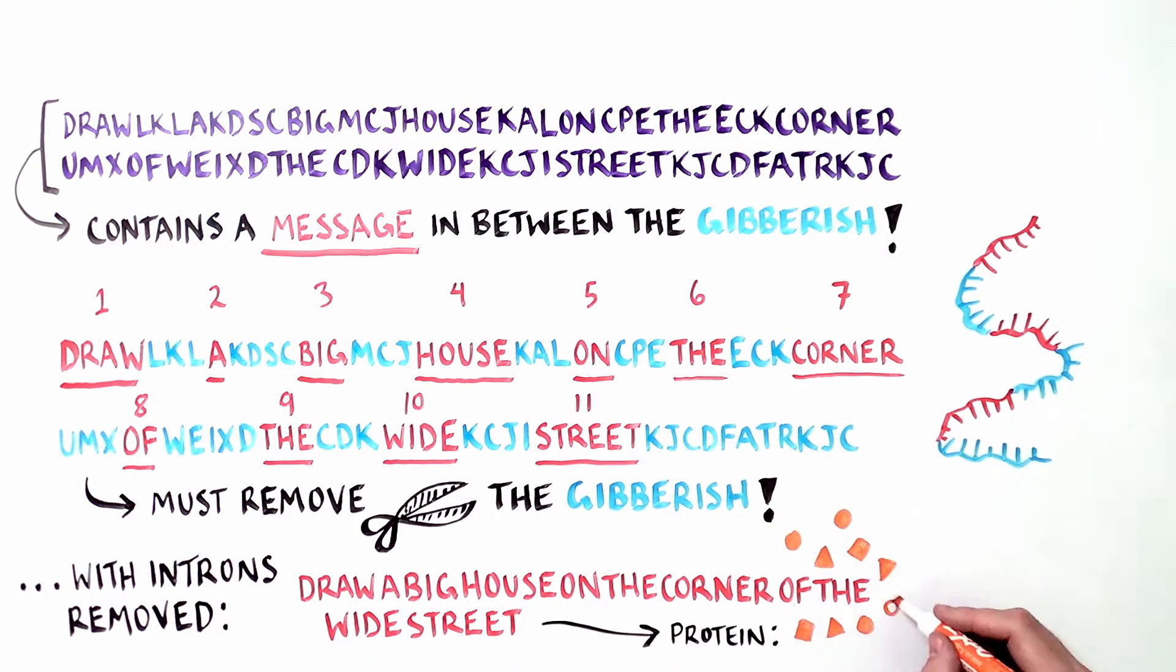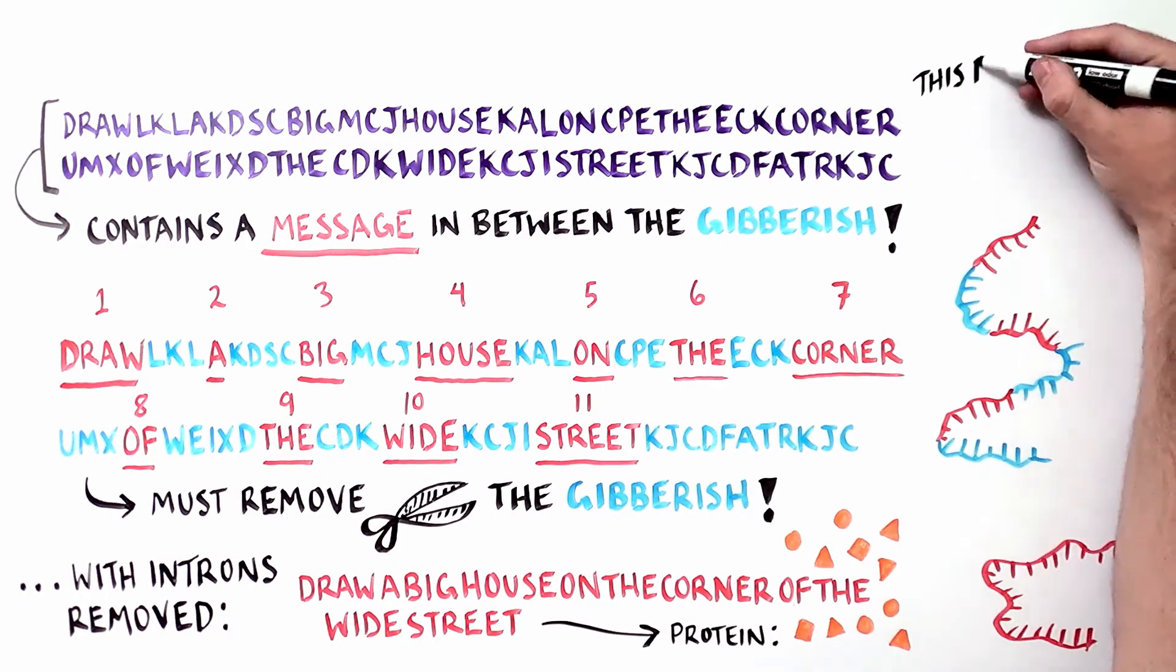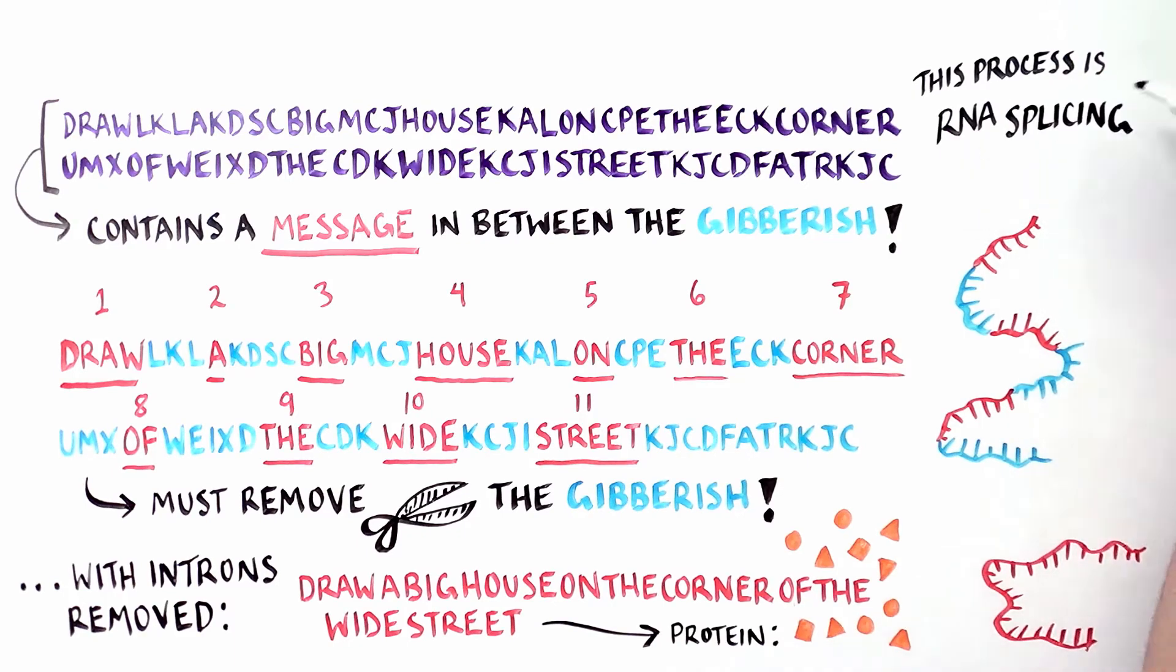The process of going from a full length, unedited RNA instruction to a coherent message, draw a big house on the corner of the wide street, is called RNA splicing.